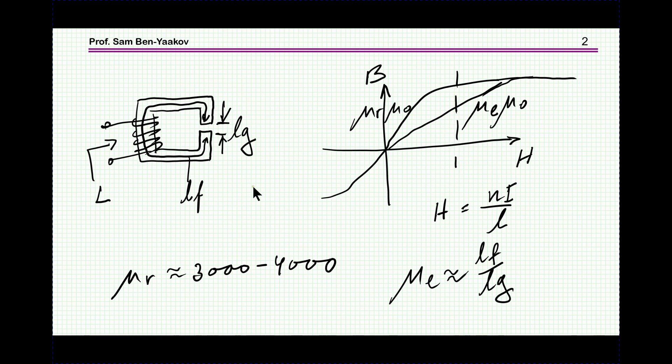Now by putting a gap you might say that we are diluting the permeability and consequently for the same current, same H, we are at a lower B.